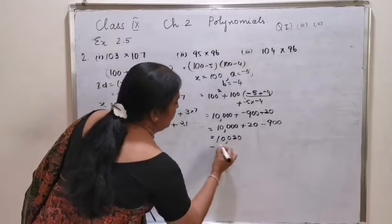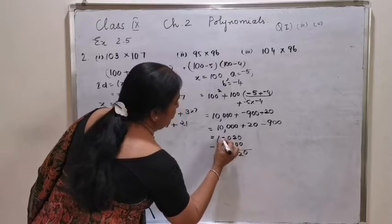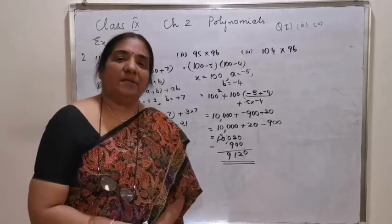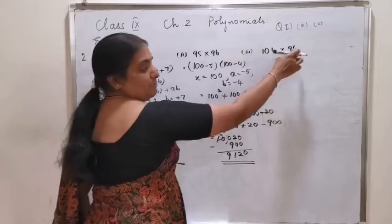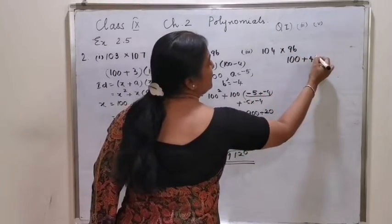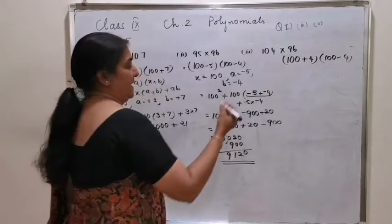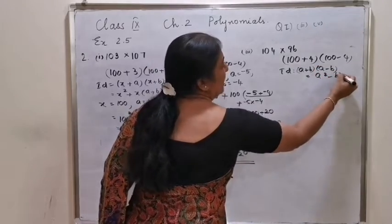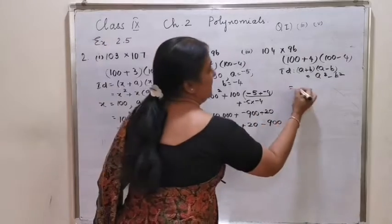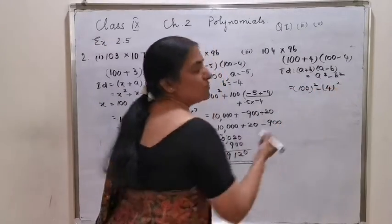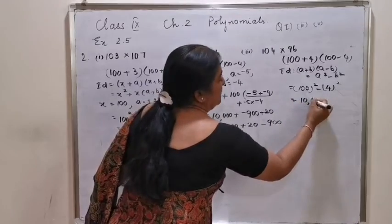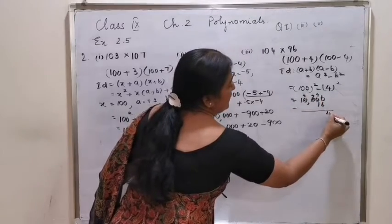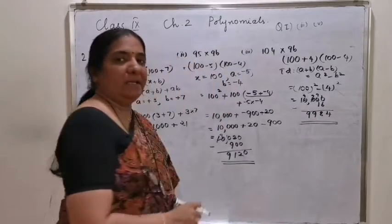The calculation: first the addition, then the subtraction. 10,000 plus 20 gives 10,020, minus 900 gives 9,120. The third one: 104 into 96 can be taken as 100 plus 4 into 100 minus 4. The identity is a plus b into a minus b giving a square minus b square, which is 100 squared minus 4 squared: 10,000 minus 16 equals 9,984.